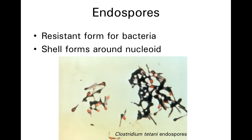And in some cases, the endospores can be very distinctive. What happens is a mini cell wall forms around the nucleoid, protecting the genome of the particular bacterium. And in this photomicrograph, these are cells of Clostridium tetani, the causal agent of tetanus.